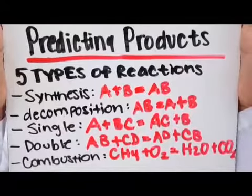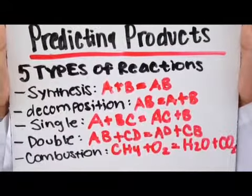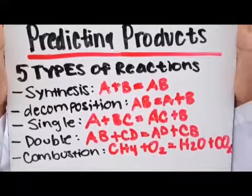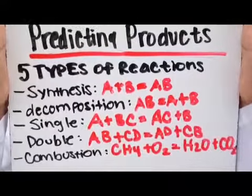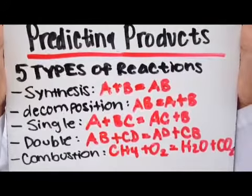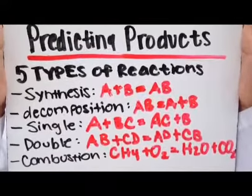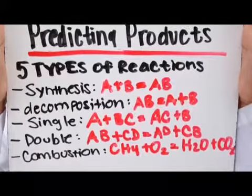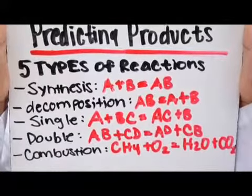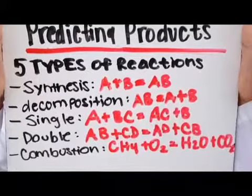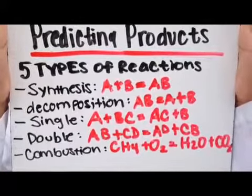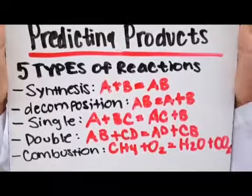Before we get started, here's what we need to know: the five types of reactions. The first one being synthesis — A plus B is equal to AB. Decomposition — AB is equal to A plus B, which is the opposite of synthesis.